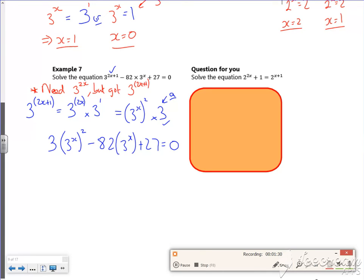So I'm going to put in poly, 3, minus 82, 27.